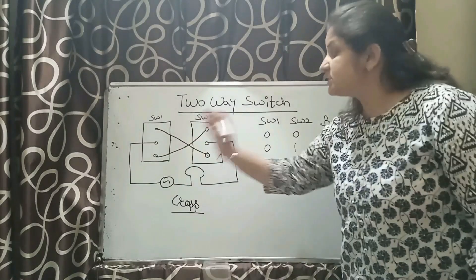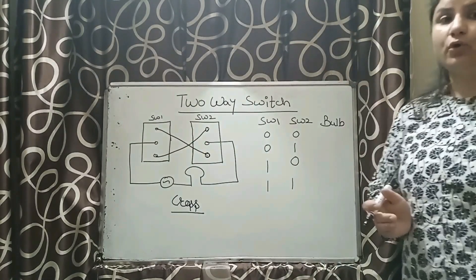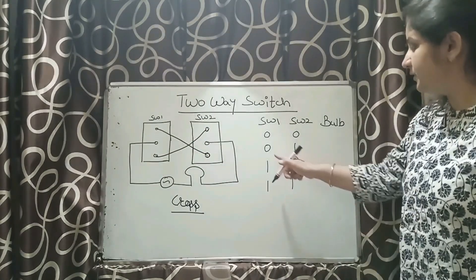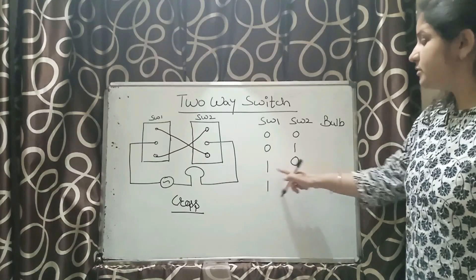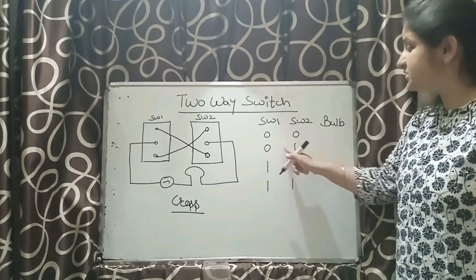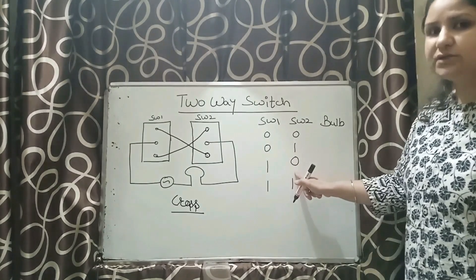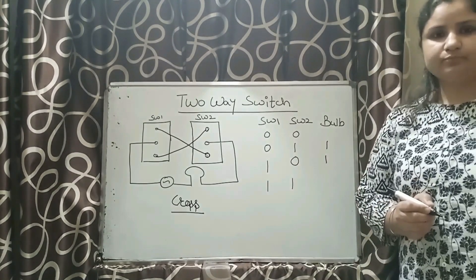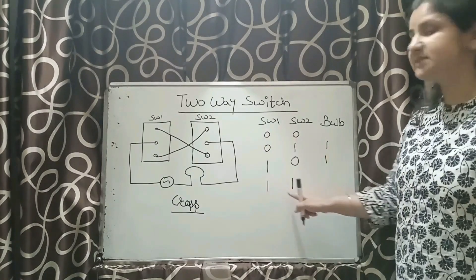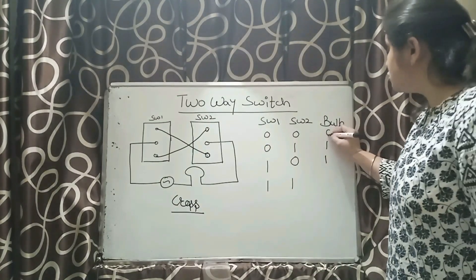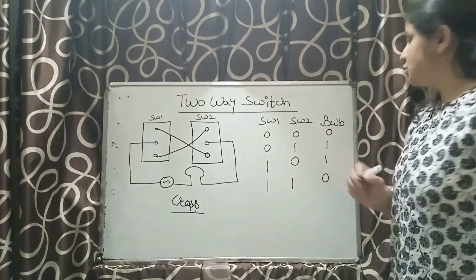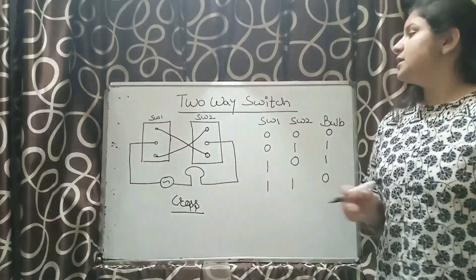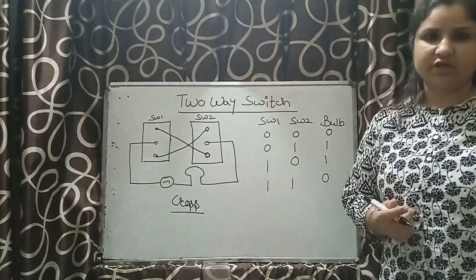Now in the case of cross connection, the bulb is going to glow when the position of the switches is opposite — for example, 01 or 10. The position of the switches is opposite, so the bulb is going to glow. Whereas when the position of the switches is the same, the bulb is not going to glow at all. So this is what we observe in the case of cross connection in two-way switch connections.